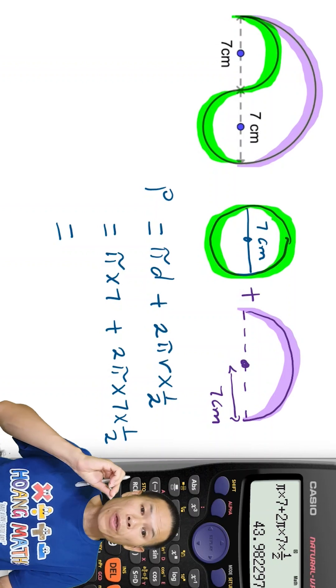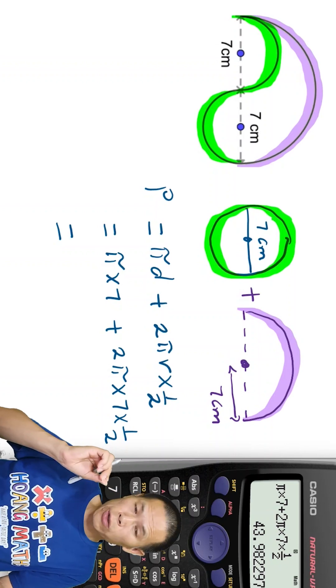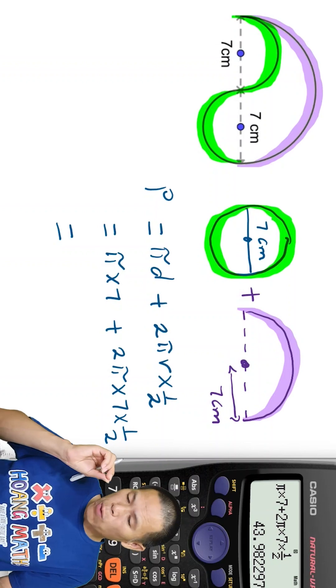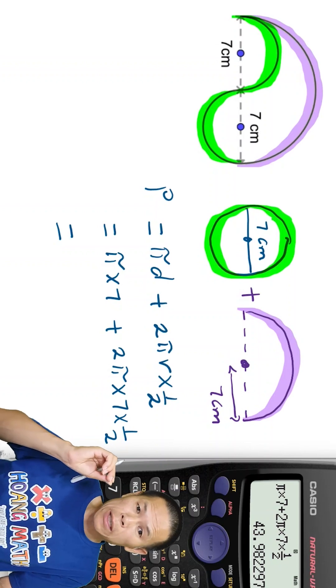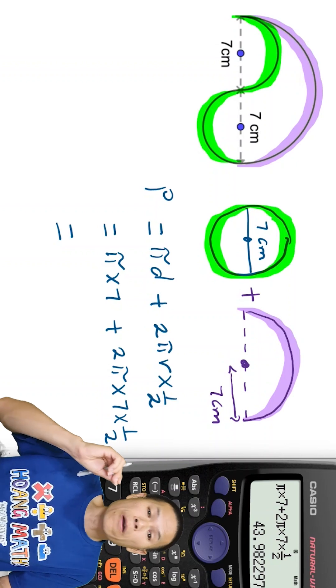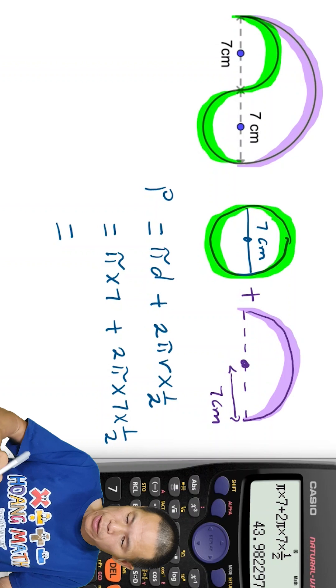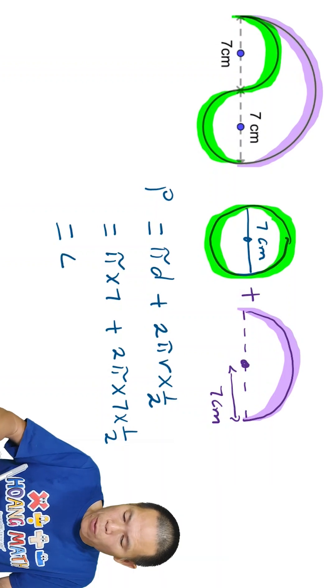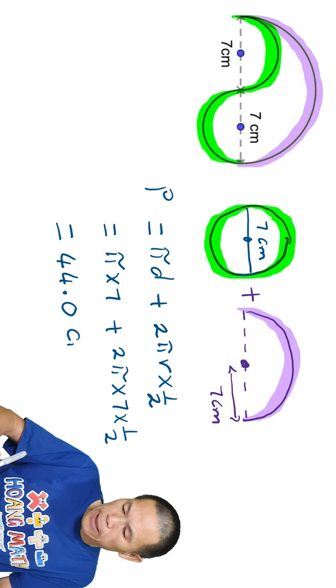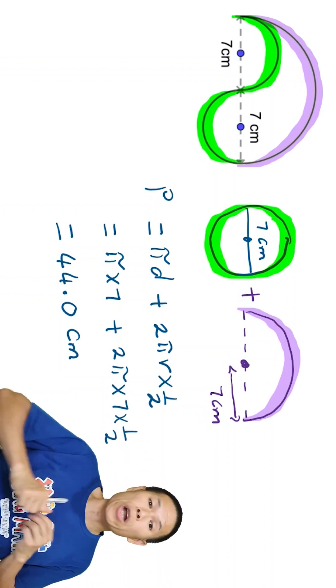So the answer is 43.98 and so on. Correct to one decimal place. So that would give me, because 9 plus 1 is 10. So instead of 43 becomes 44.0, because 9 plus 1 is 10. So that is 44.0 centimeters. So there you go, and I hope you got it correct.